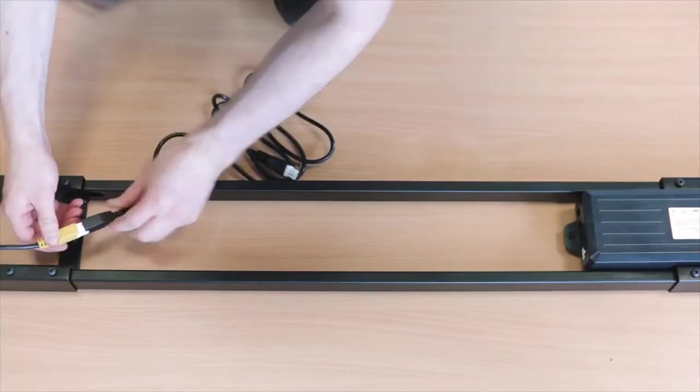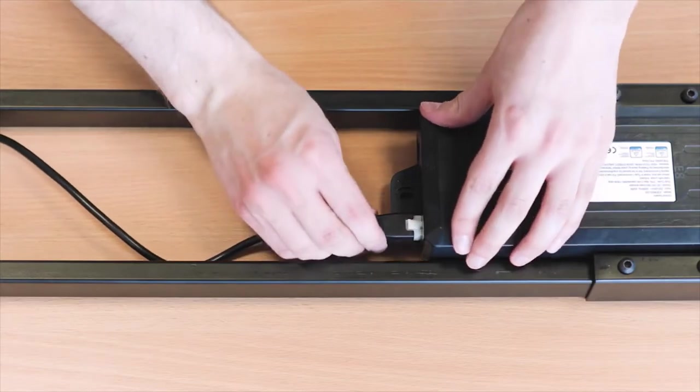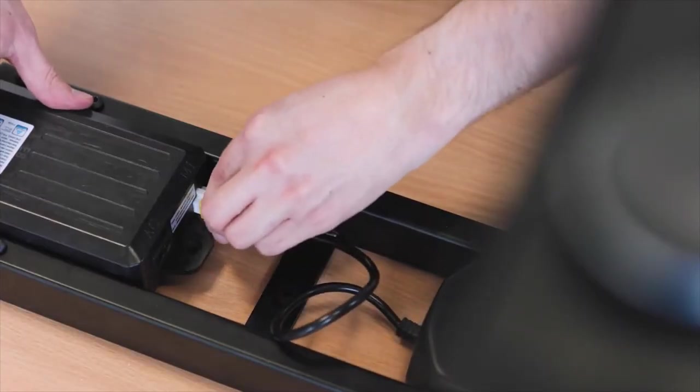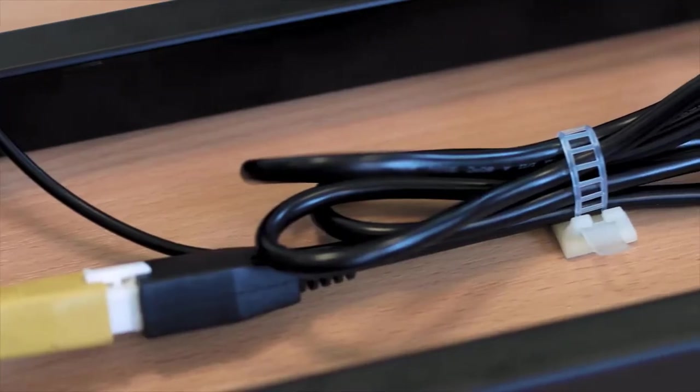Connect all cables to the control box and use the cable ties to secure it into place. You can also purchase a cable basket or cable spine to help with your cable management.